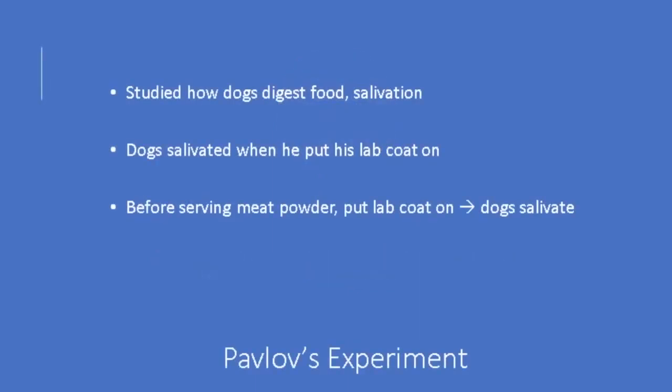Let's start with Pavlov's experiment. What Pavlov was doing was studying how dogs digested their food, and he primarily measured their salivation. He would serve them food in the form of meat powder, and the dogs, as a response, would salivate to the food.